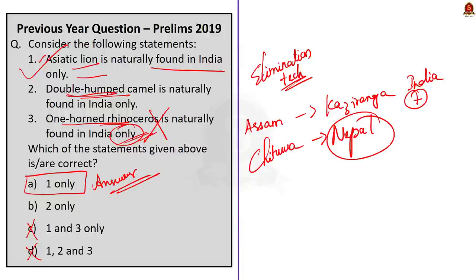Here I don't even know about the double-humped camel, but I approached this question and arrived at the correct answer. With a minimum amount of knowledge, try to approach the question and you will be able to arrive at the correct answer. The answer for this question is option A — one only is the correct statement. Now let me tell you a few facts about all three species. Don't think this is only a 2019 question — these three species will be in current news also, so just be aware of them.